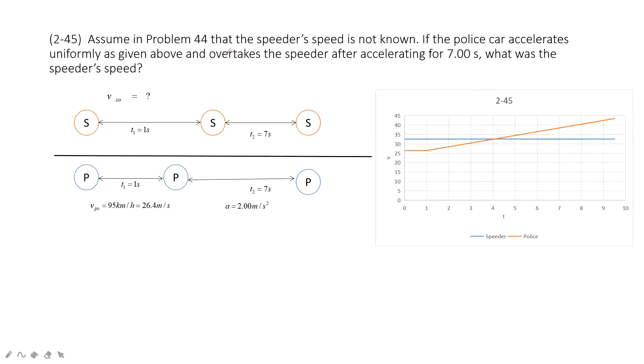So, this is the follow-up with problem 44. It tells us there is a speeder and a police, right? And then, in this time, the speeder's velocity is not known but this speeder moves at a constant velocity.